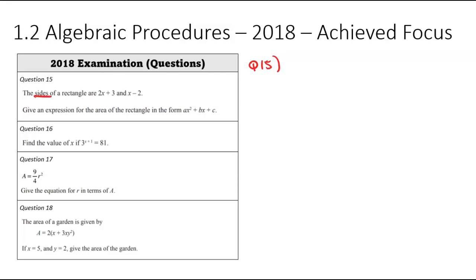We've been told the sides of a rectangle are 2x plus 3 and x minus 2. Give an expression for the area of the rectangle in the form ax squared plus bx plus c. So this here is the expanded form, which means the question is asking us to put these in brackets and expand it, and then the numbers in front of the x squared, the x, and the constant will be your answer. So let's get into that.